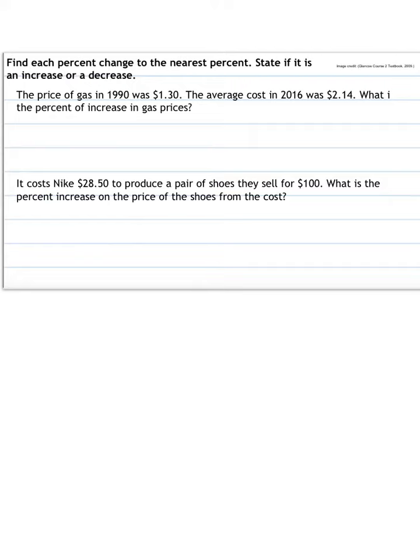So we put the, it's increasing, so we do the new cost, which is the $2.14, and we subtract it from the old cost, $1.30. Same thing as taking the large minus the small, and we divide it by the original. So which number was it that we were starting with? Well, 1990 was our original amount, that was before, so that is what we are dividing by.